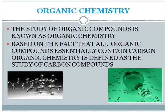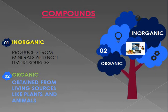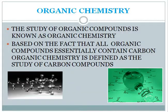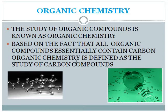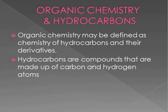The study of organic compounds is known as organic chemistry. Organic means obtained from living sources like plants and animals. Based on the fact that all organic compounds essentially contain carbon, organic chemistry is defined as the study of carbon atoms. Always remember — the chief constituent of organic compounds is carbon. Carbon atoms form long chains, which is known as catenation. The modern definition states that organic chemistry may be defined as the chemistry of hydrocarbons and their derivatives. Derivatives means OH, CHO, carboxylic group, alcohol group, and aldehyde group.